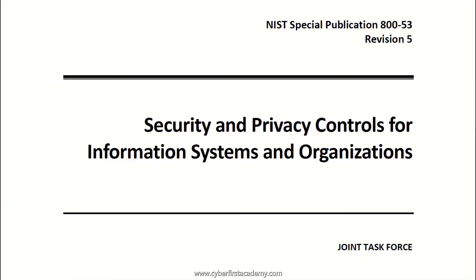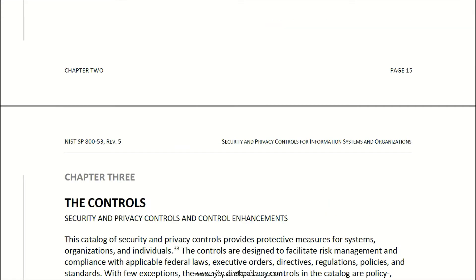Cyber risk guy here. Today we're going to go through the AC access controls for NIST 800-53 rev5. Let's take a look at NIST 800-53 revision 5, security and privacy controls for information systems and organizations. We're scrolling down to page number 16, the controls.